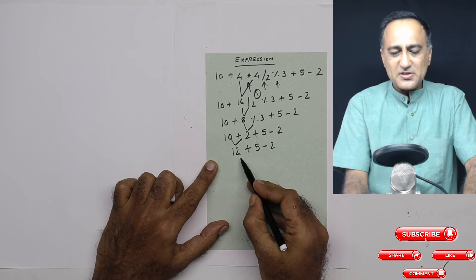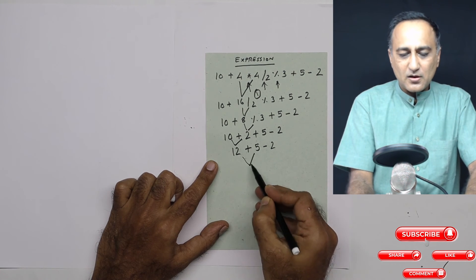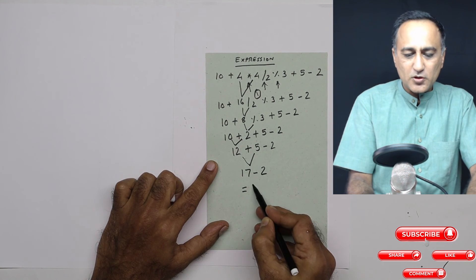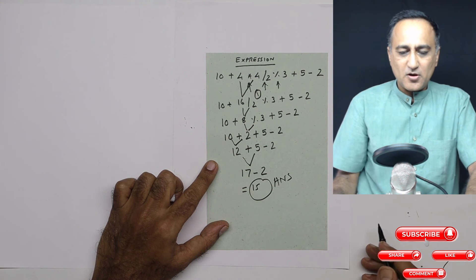Now the next step is 12 plus 5 equals 17, then 17 minus 2. Finally, 17 minus 2 is equal to 15, and this happens to be the answer.